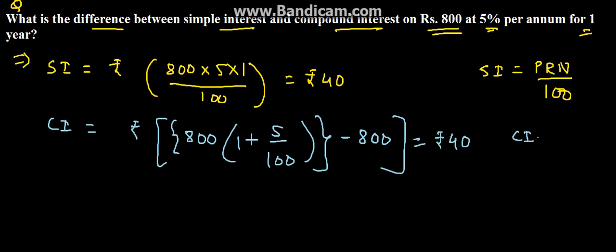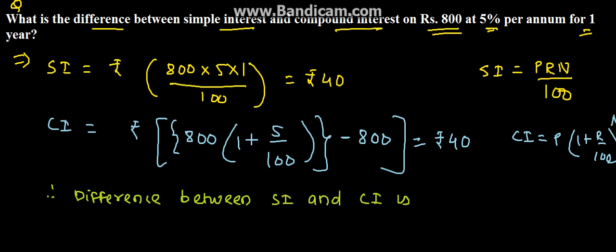We know the compound interest formula: P into 1 plus R upon 100, whole raised to N. We can conclude that the difference between simple interest (SI) and compound interest (CI) is nil, which is the solution for the given problem. Thank you.